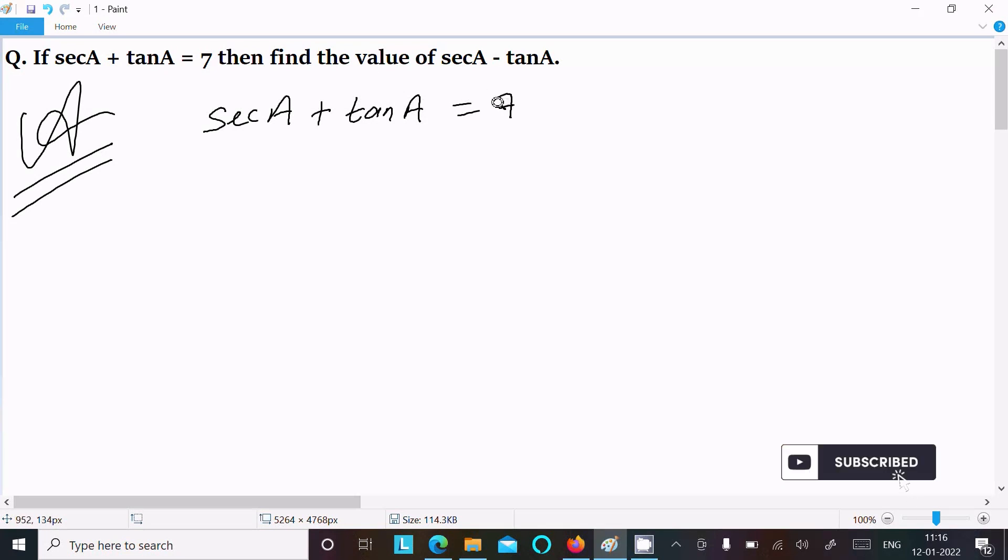Now we need to find the value of secA minus tanA. So writing here, now we know the formula. The value of sec²A minus tan²A is 1. This is the formula we have.